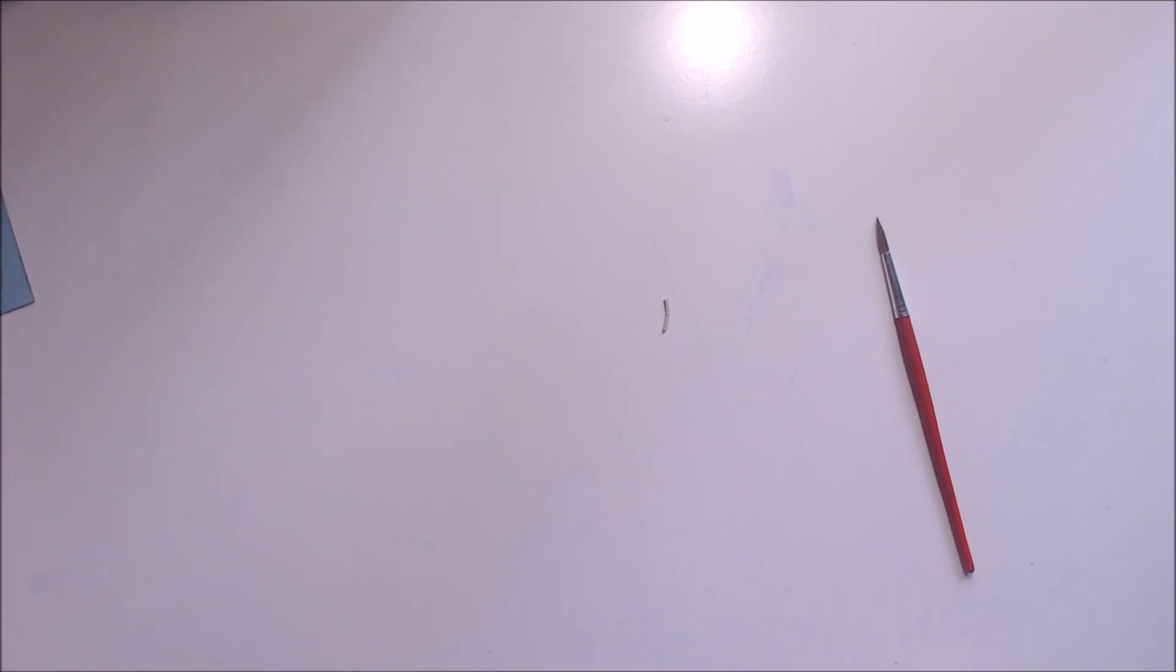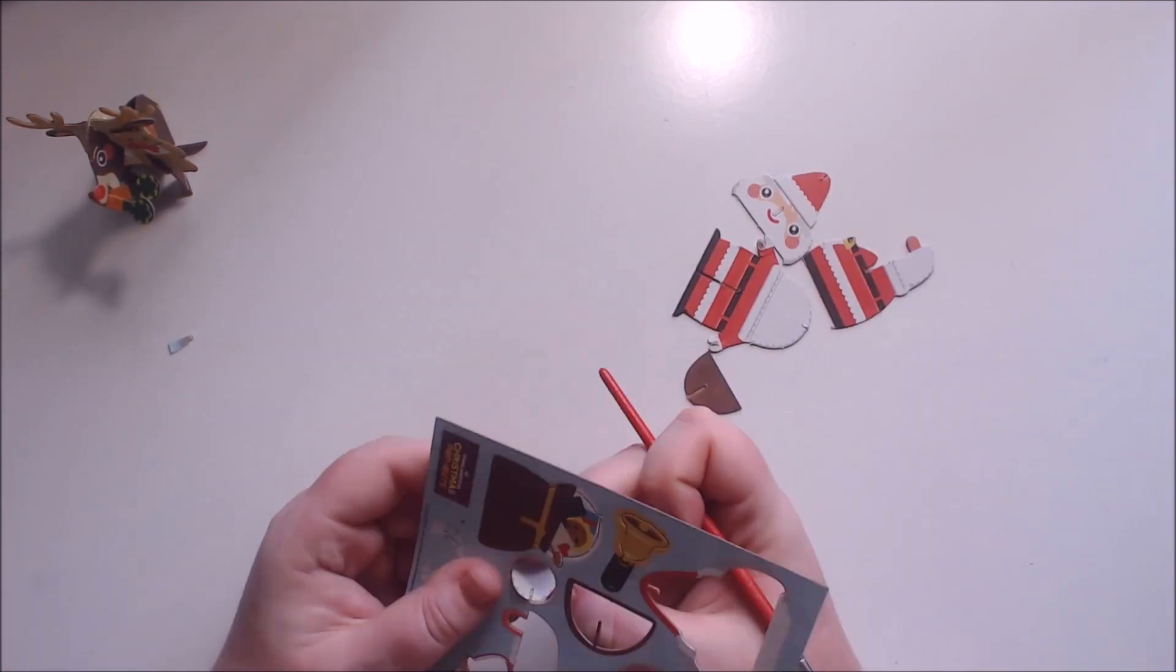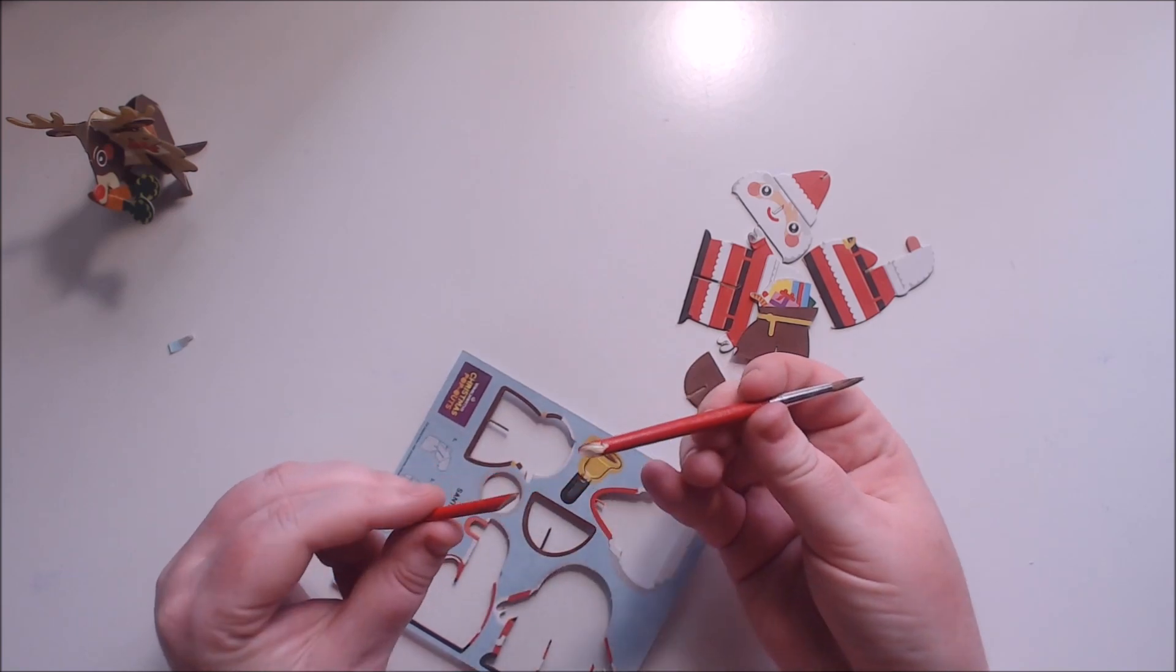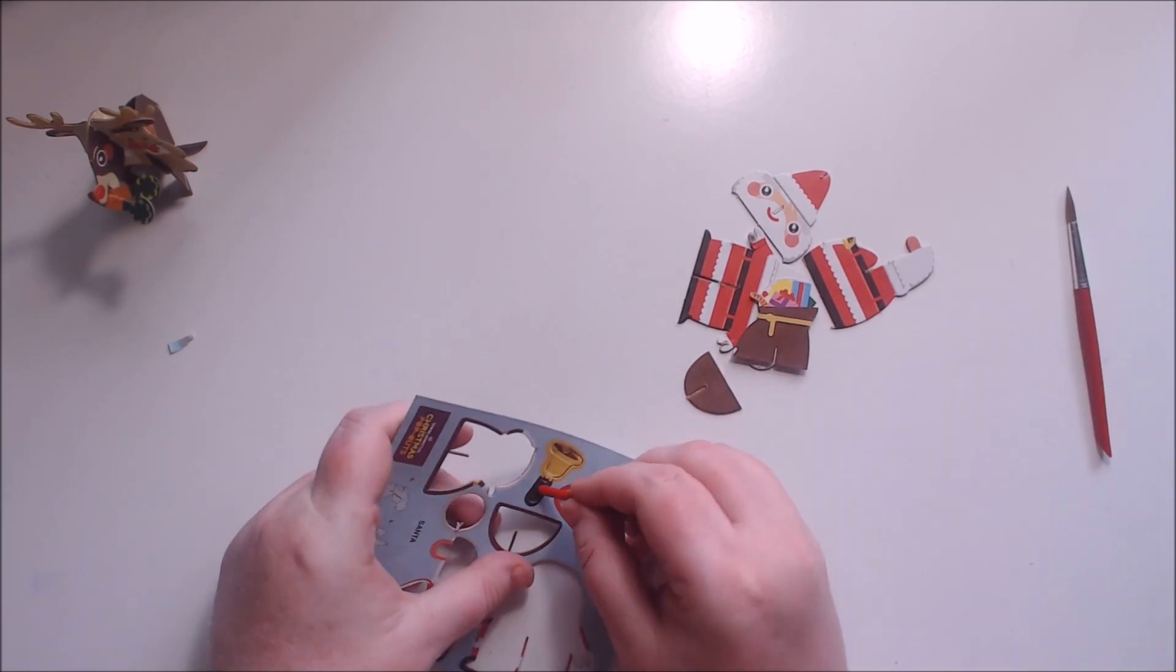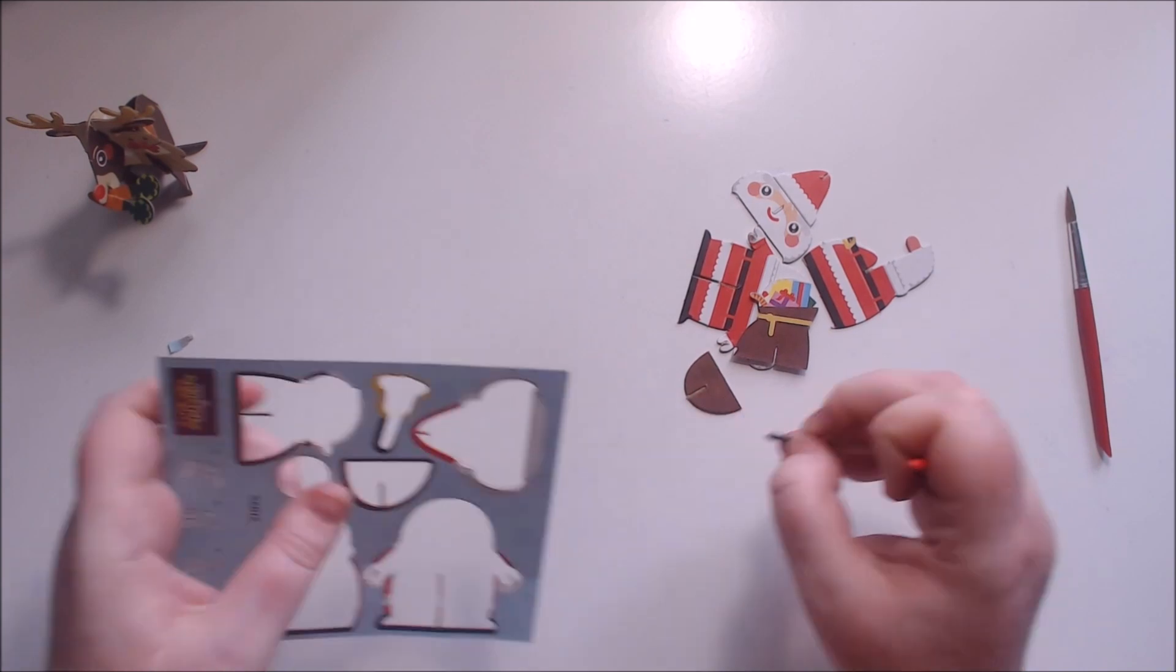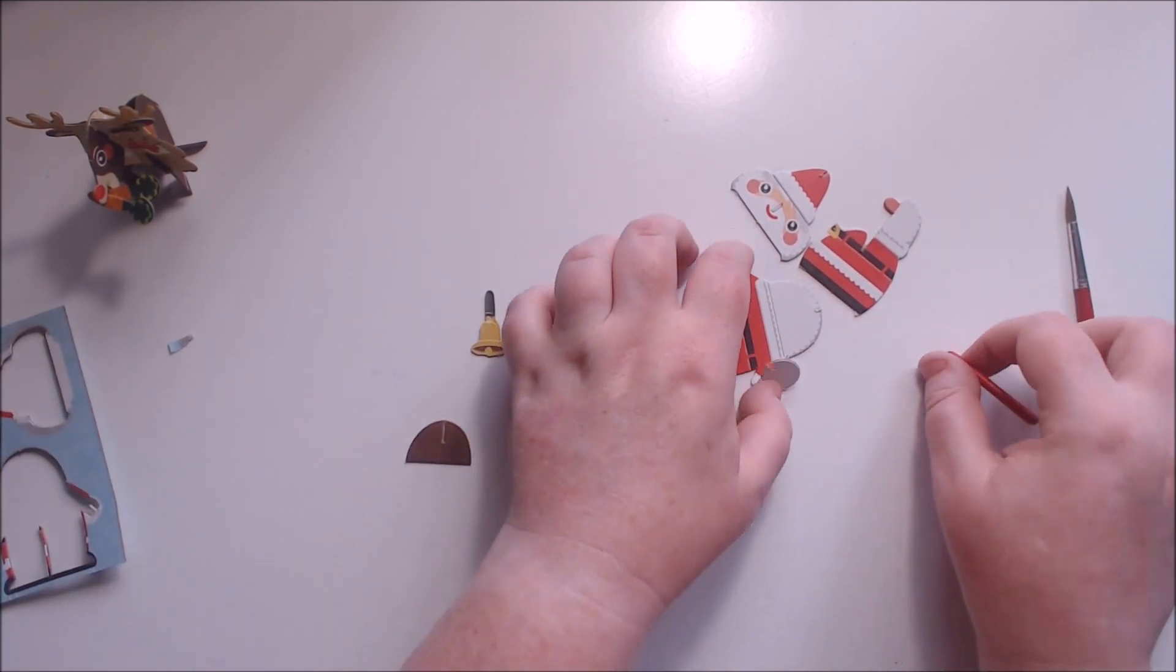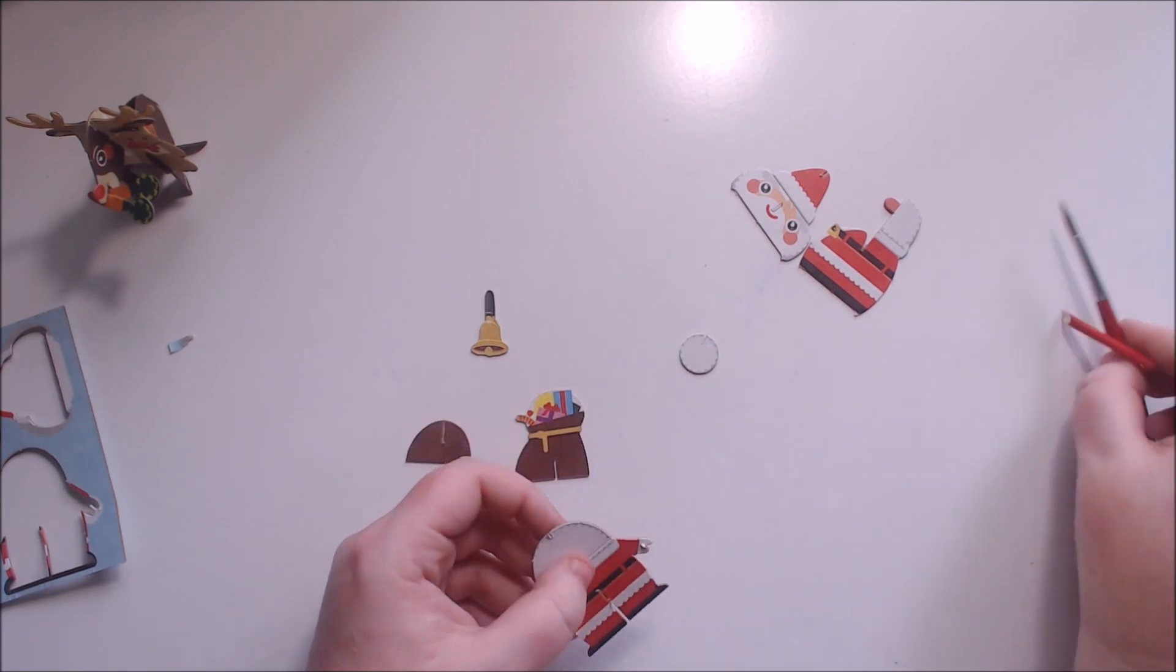So that is the cute little Santa's reindeer done. I think this one's supposed to be Rudolph, so let's pop him to the side and we'll get started on the next one. So let's do Santa. Again, these ones are pretty tricky. This one was so difficult it snapped my brush, which I thought was a bit funny because it's a wooden brush. So I must be pressing hard. So let's get started with the Santa's body.